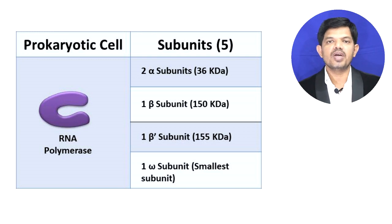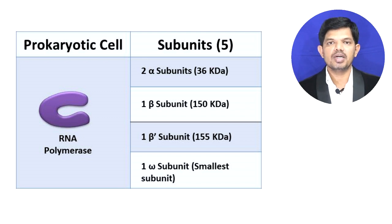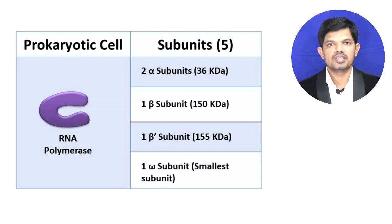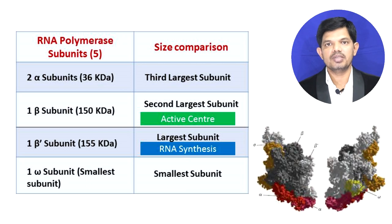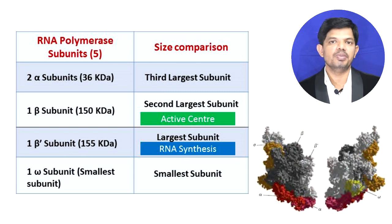There are five different subunits present in the bacterial or prokaryotic cell. These subunits are: two alpha subunits, one beta subunit, one beta dash subunit, and one omega subunit. Out of these five subunits, the omega subunit is the smallest, whereas the beta dash subunit is the largest.